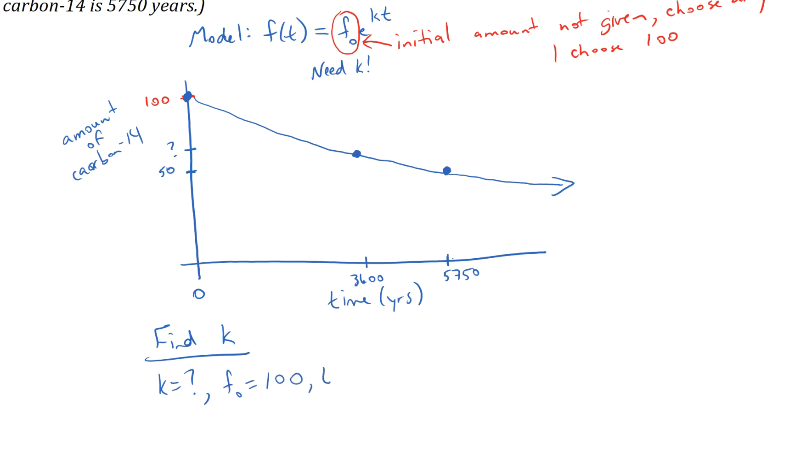I need a value for time. Now, the only time that I have here where I know its y value is at the half-life. So I'm going to use a time of 5,750 because I know for that particular time, I know f(t), its y value, happens to be 50. So I'm choosing that because I have both of those values. And now I have everything but k.